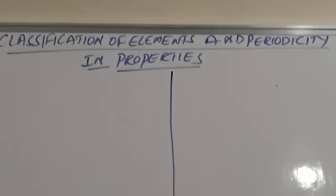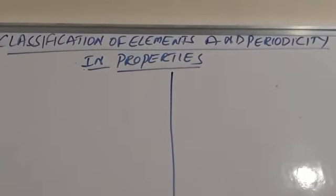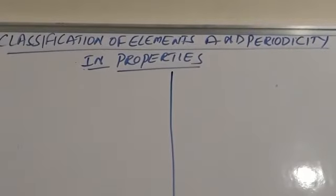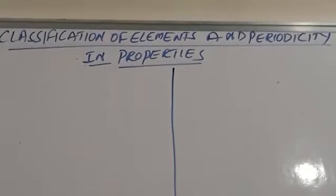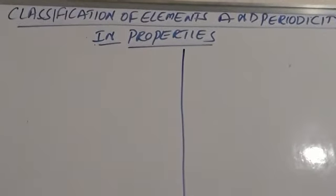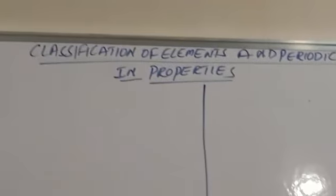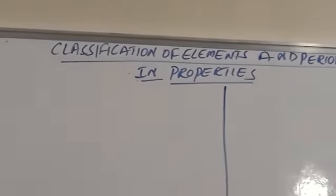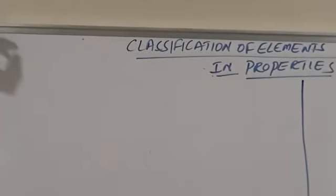Students, next — first year revision program, second track. First chapter is classification of elements and periodicity in properties. Going to classification of elements.